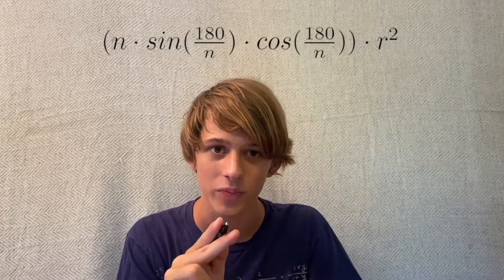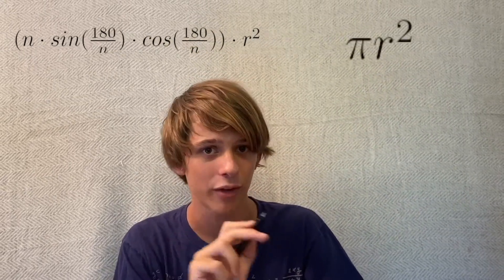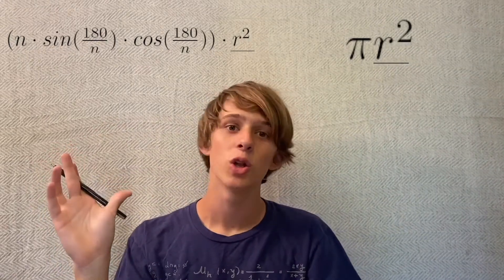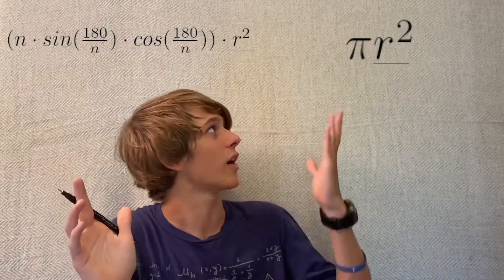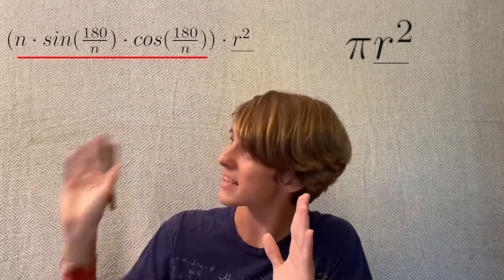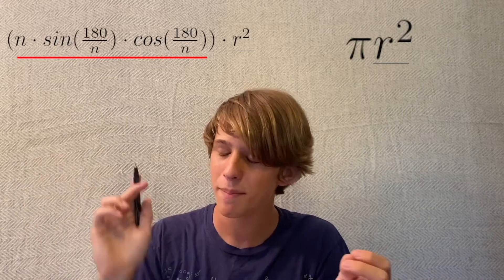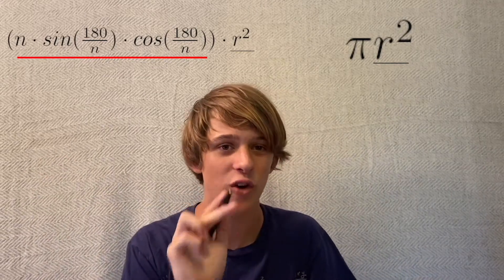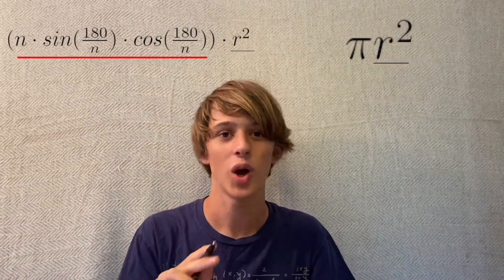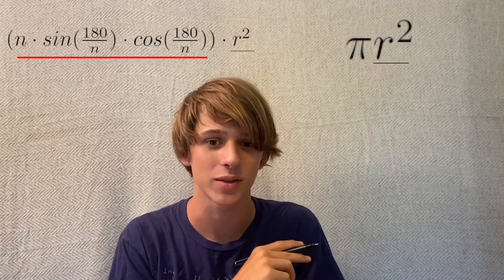Do you notice something familiar about our formula? Our formula looks suspiciously like the area of a circle formula, which would mean that this here is pi. I bet this is how mathematicians first found the area of a circle formula. We're walking in the footsteps of giants here. Let's go test it out.